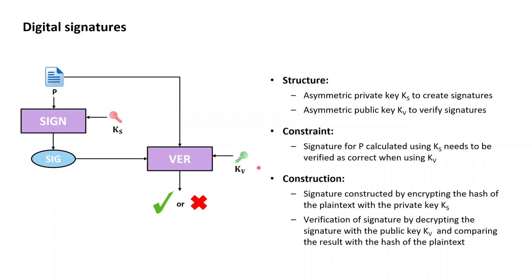Peeking briefly under the hood of digital signatures: a digital signature is often just a hash of the plaintext encrypted with the private key of the participant. Verifying a digital signature amounts to decrypting this encrypted hash with the corresponding public key and comparing the decrypted hash with a recalculated hash of the received plaintext. If a cryptographic hash function is used, digital signatures can bind the signature to the plaintext down to each and every single bit.